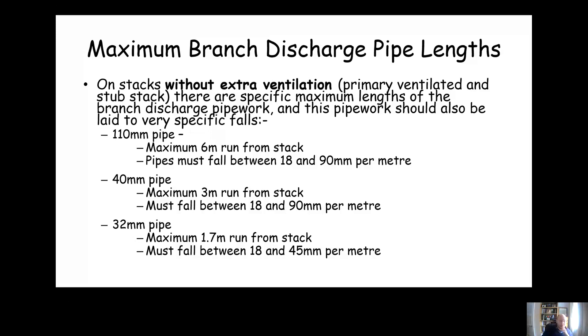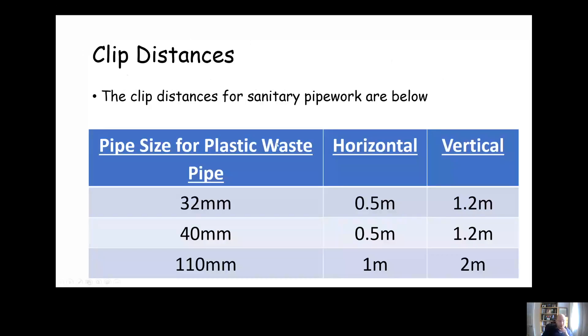The clip distances for sanitary pipework is shown here. 32 millimeter and 40 millimeter are both the same: half a meter horizontal clip distance, 1.2 meters vertical clip distance. And for 110 millimeter, a nice easy one to remember: one meter horizontal clip distance or two meters vertical clip distance maximum.